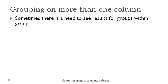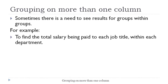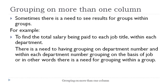Sometimes there is a need to perform grouping on more than one column. It means that first grouping is performed on the first column and then within that group, grouping is performed on the second column. For example, where we wish to find total salary paid to each job title in each department, first grouping will be made on the department field and then within each department, grouping is performed on job field. In simple words, we wish to perform a group within another group.